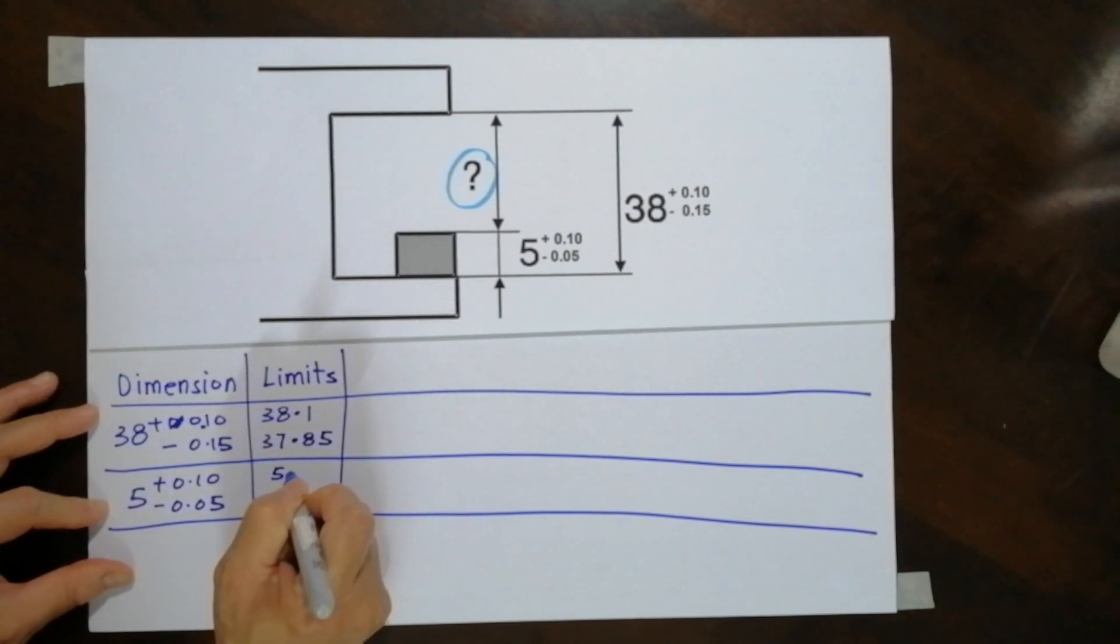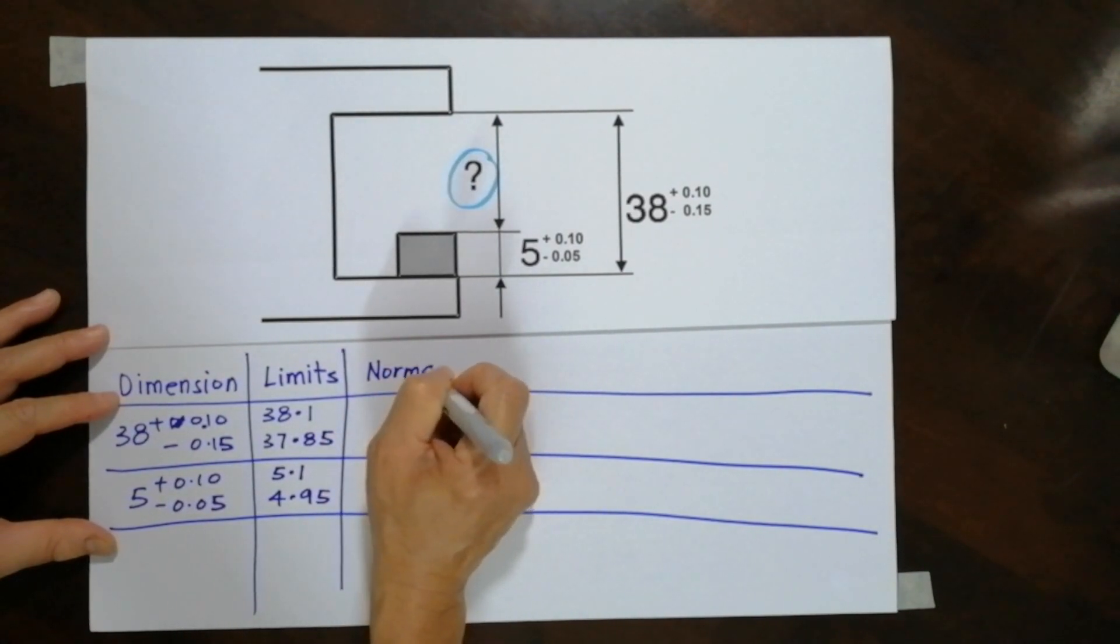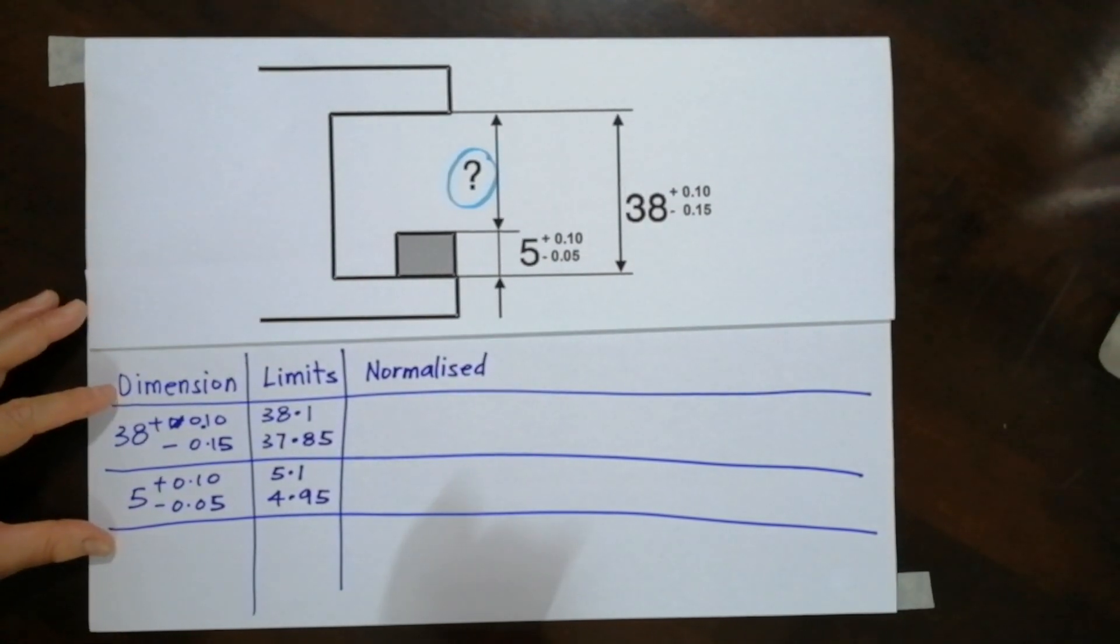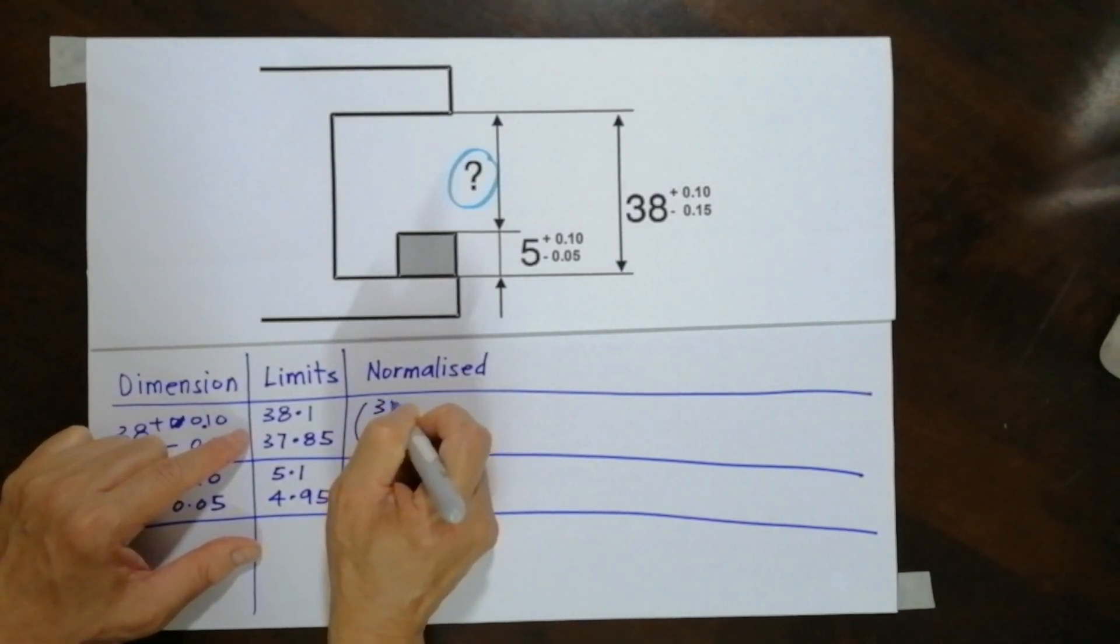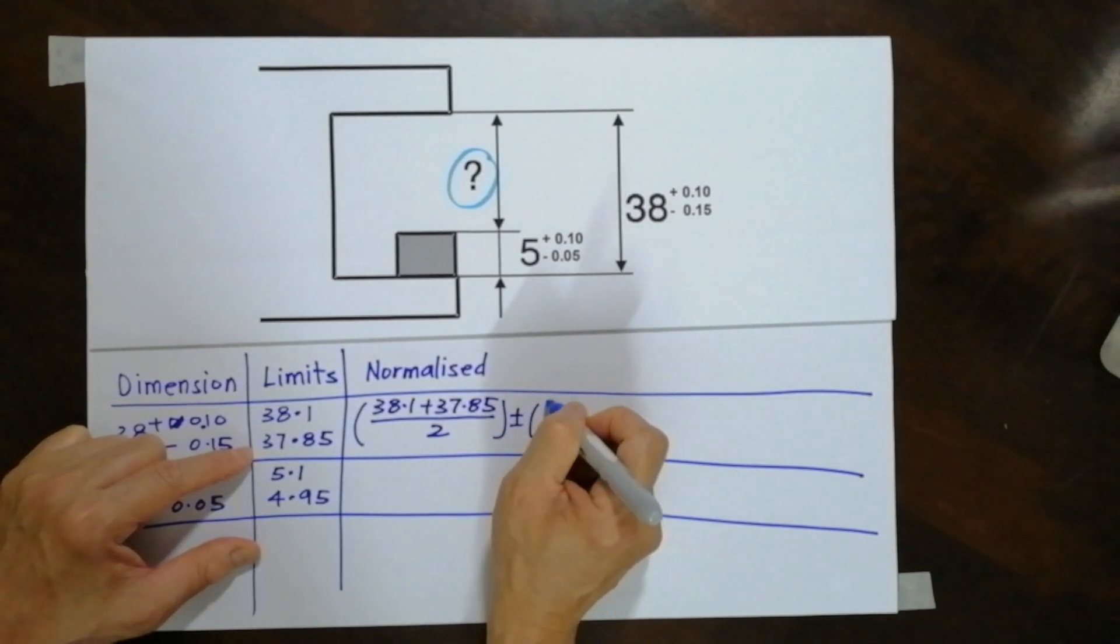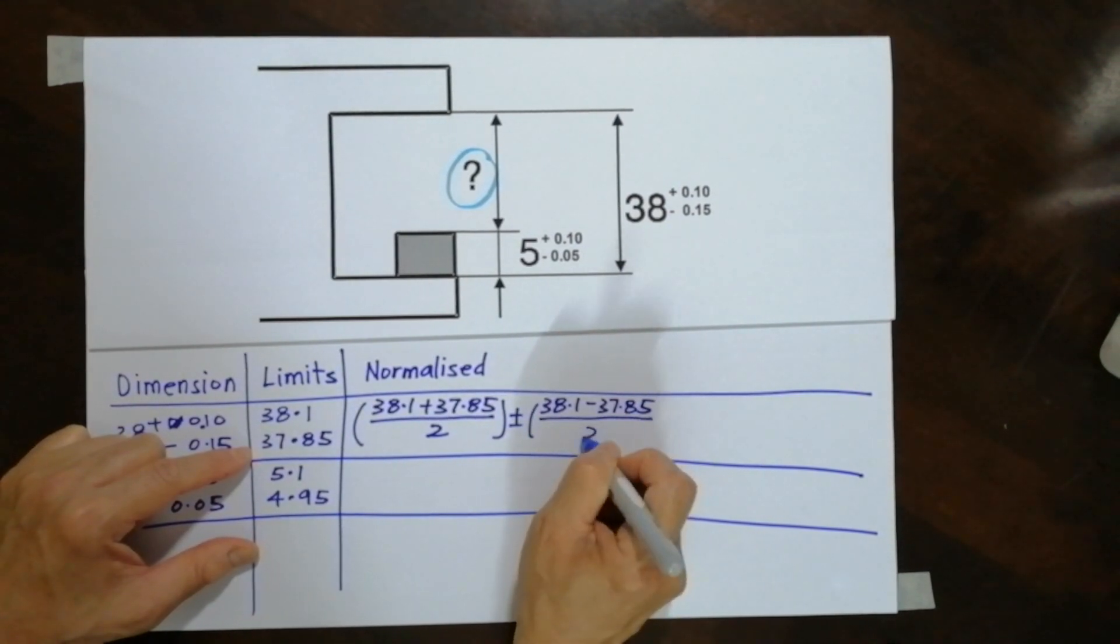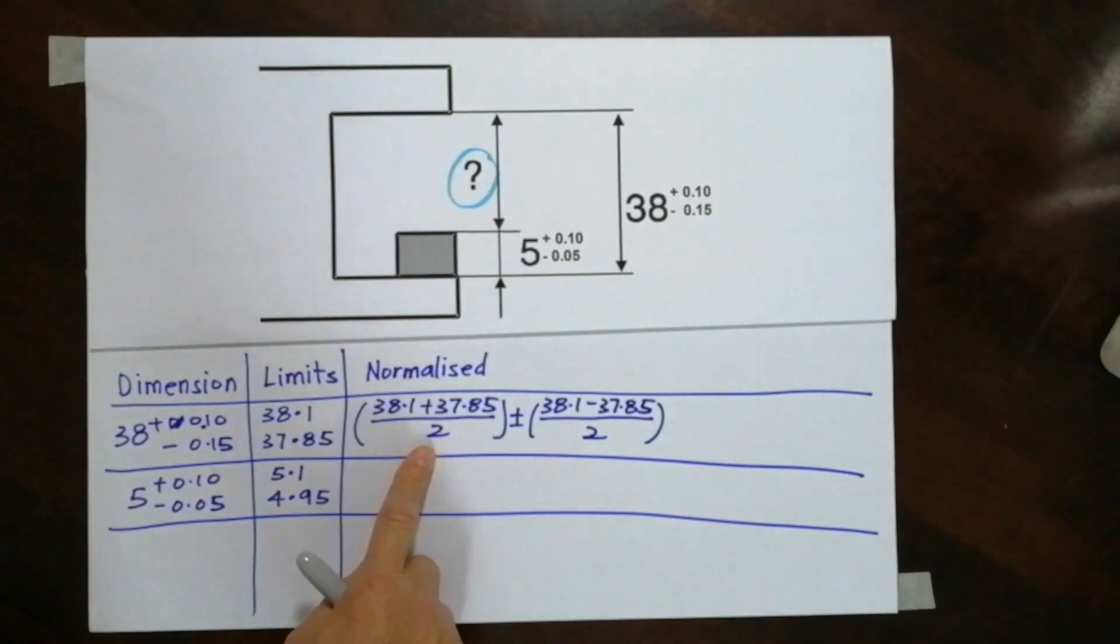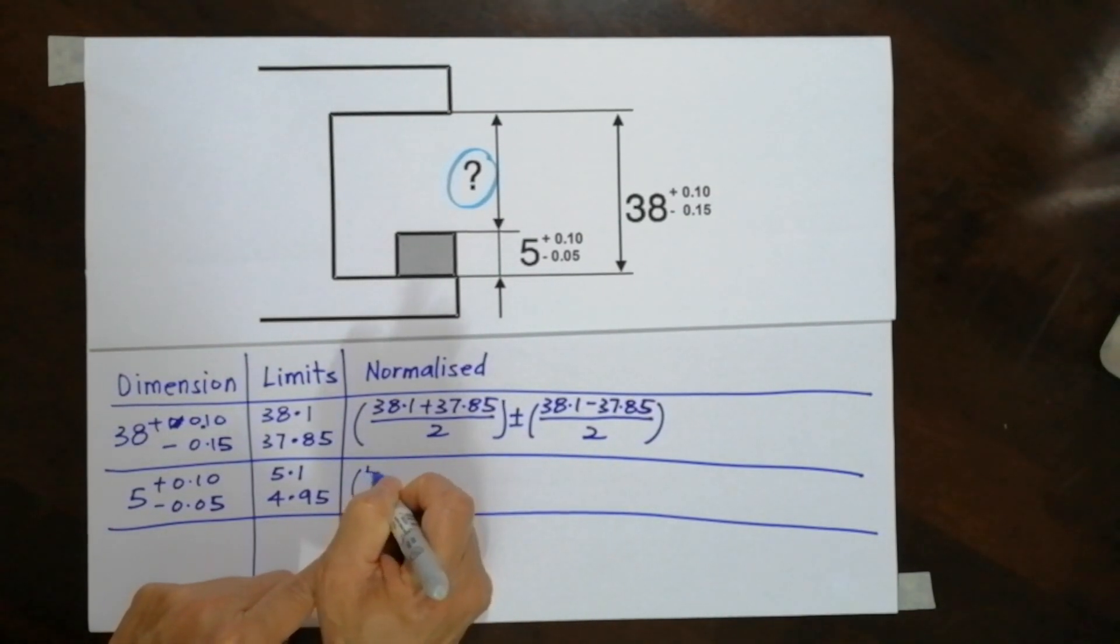The next line is where we're going to do the normalization. We're going to normalize the dimension, so we will have to combine this and this. It is the average of 38.1 plus 37.85 divided by 2, plus and minus. The next one will be 38.1 minus 37.85 divided by 2. The first one is the nominal dimension, the second one is the bilateral symmetrical tolerance. Here I do the same thing similarly.